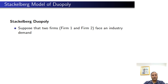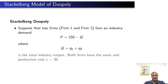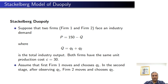Let us take a numerical example of the Stackelberg-OPEC model. We assume two firms, firm 1 and firm 2, facing an industry demand function P = 150 − Q, where Q = q1 + q2. Here q1 is the output of firm 1 and q2 is the output of firm 2. Both firms have the same per unit cost of production equal to 30. The timing is that firm 1 moves first and chooses q1, and in the second stage firm 2 observes q1 and chooses q2.